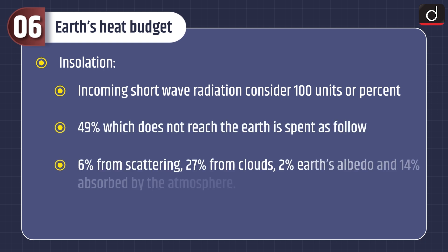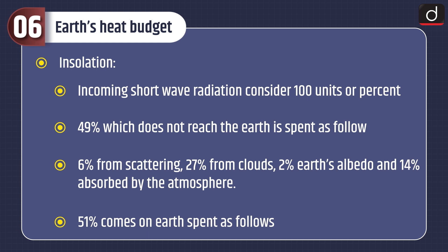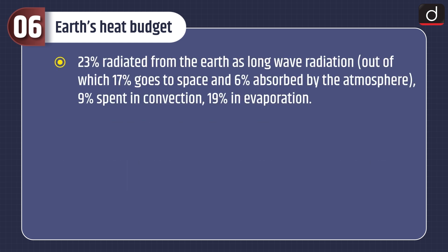Regarding Earth's heat budget: consider insolation as 100 units. Of these, 49% does not reach the earth and is spent as follows — 6% through scattering, 27% from clouds, 2% from earth's albedo, and 14% absorbed by the atmosphere. The remaining 51% reaches the earth and is spent as follows: 23% is radiated from the earth as long-wave radiation, of which 17% goes to space and 6% is absorbed by the atmosphere; 9% is spent in convection and 19% in evaporation.